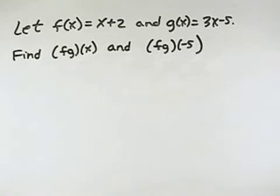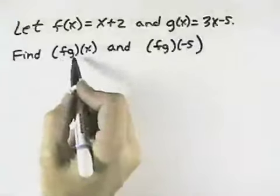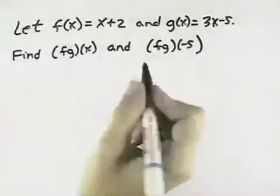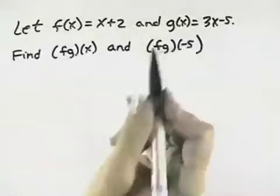Let f of x equal x plus 2 and g of x equal 3x minus 5. Find the product f times g of x, and then we'll find f times g evaluated at negative 5.